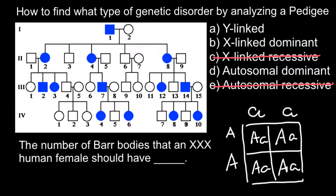But we see here that 50% of the children are affected with this genetic disorder, so this cannot be autosomal recessive. It also cannot be X-linked recessive, because with X-linked recessive, males would be affected and females would be carriers — 50% of females would be carriers and 50% of males would be affected.